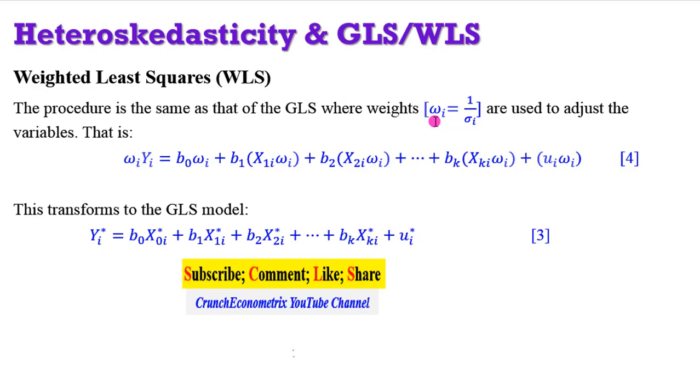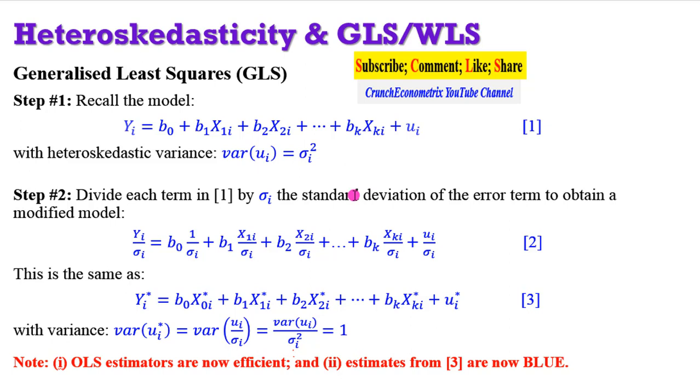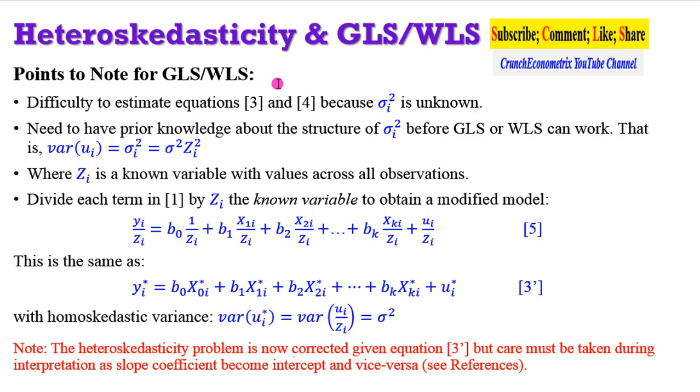So the GLS and the WLS can be used synonymously. You are going to get the same results. Once again, for the weighted least squares, you are going to have a weighted structure by 1 over sigma. And by the generalized least squares, you are going to divide each term in your model by sigma, which is the same thing as multiplying everything in equation 1 by 1 over sigma. So the GLS approach and the WLS approach will give the same outcome. But we need to consider some points for the GLS and the WLS. There will be a difficulty to estimate equations 3 and 4 because the structure of the variance, the heteroskedastic variance, is unknown. So it is important to have a prior knowledge about the structure of this heteroskedastic variance before both approaches or either approach can work.